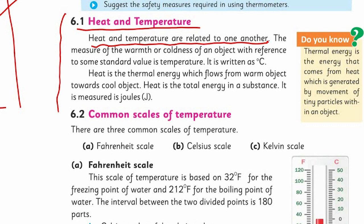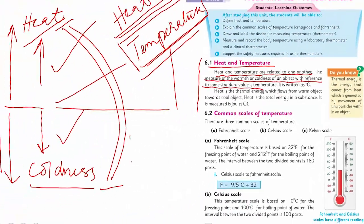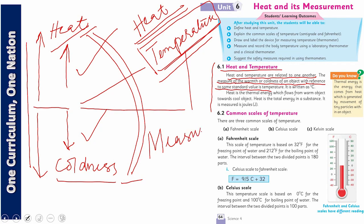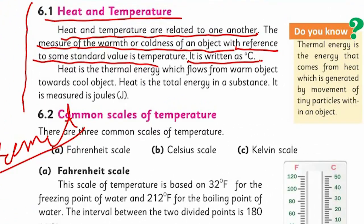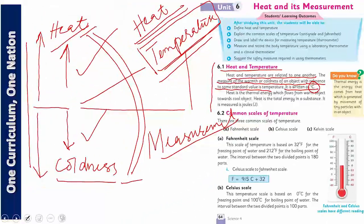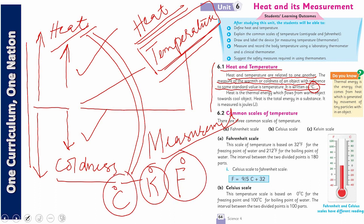The measure of warmth or coldness of an object with reference to some standard values — I will explain the standard values when we do measurement. It is written as degree centigrade. We can express temperature in degree centigrade, in Fahrenheit, and also in Kelvin. That small dot you see is called the degree symbol. So temperature can be measured in degree centigrade, Fahrenheit, or Kelvin.